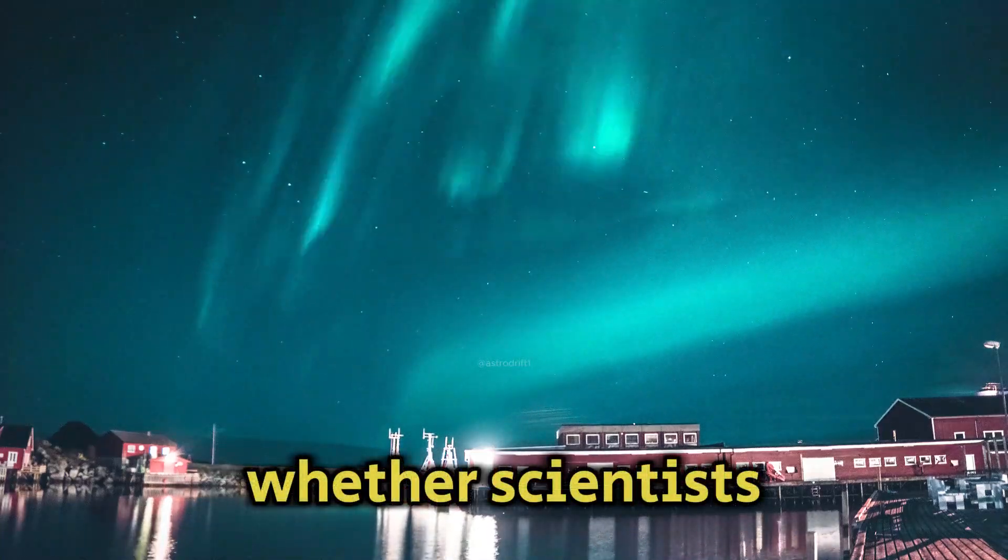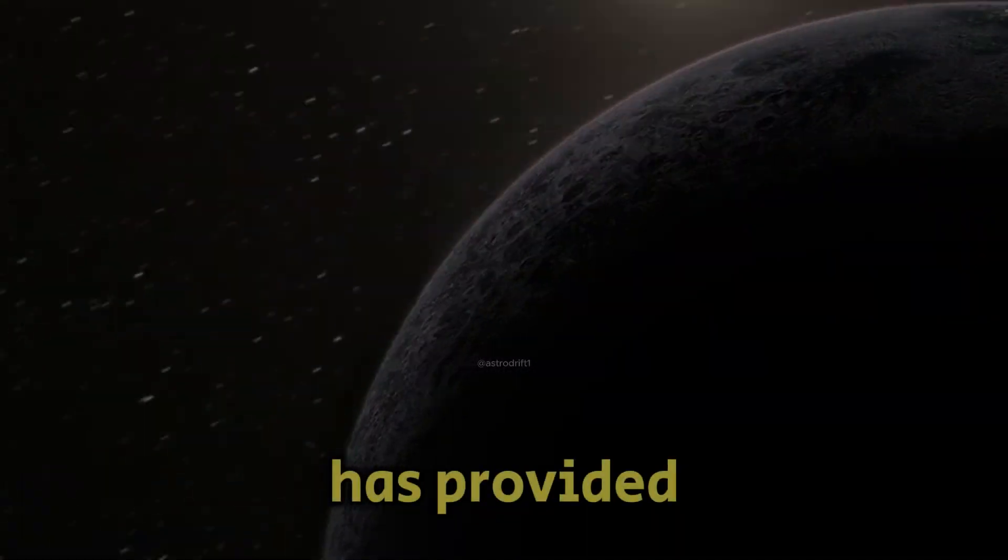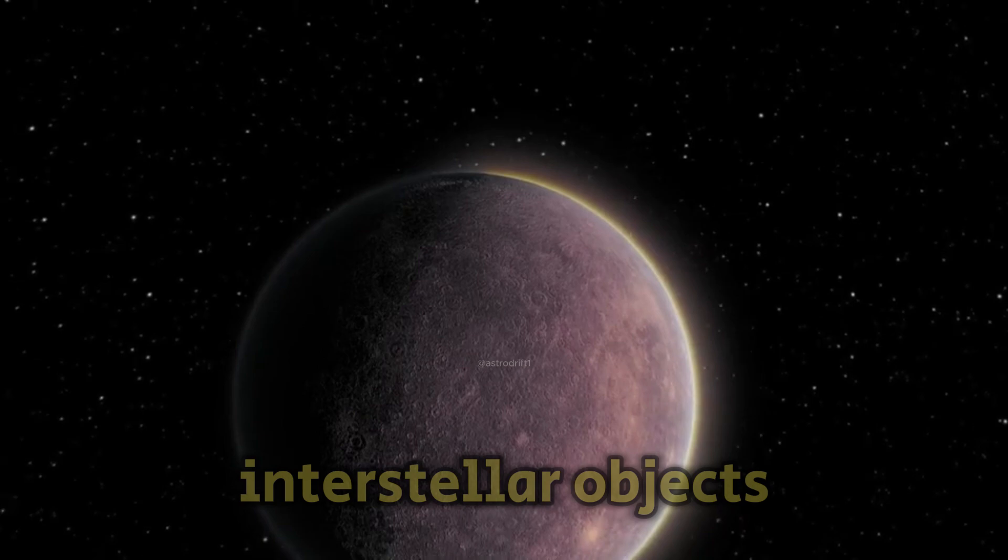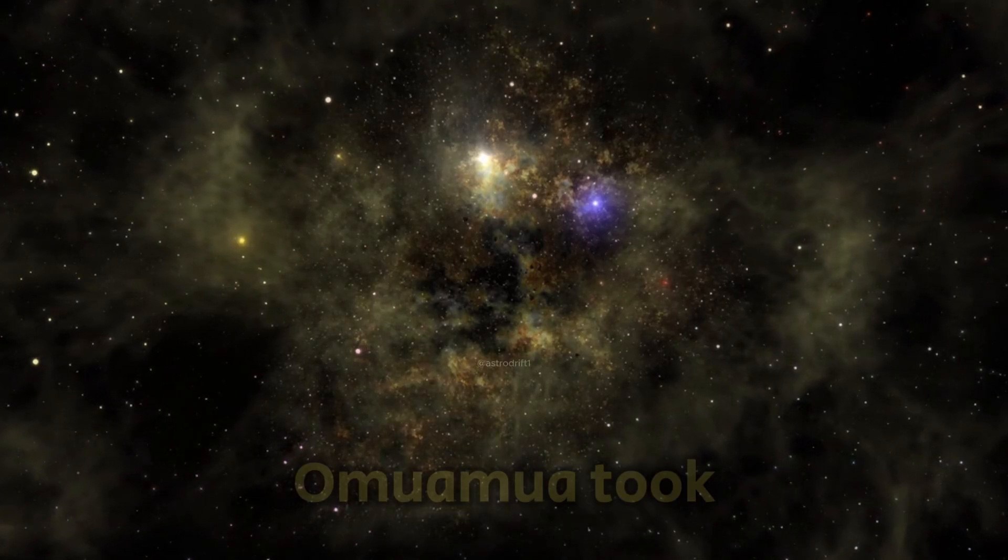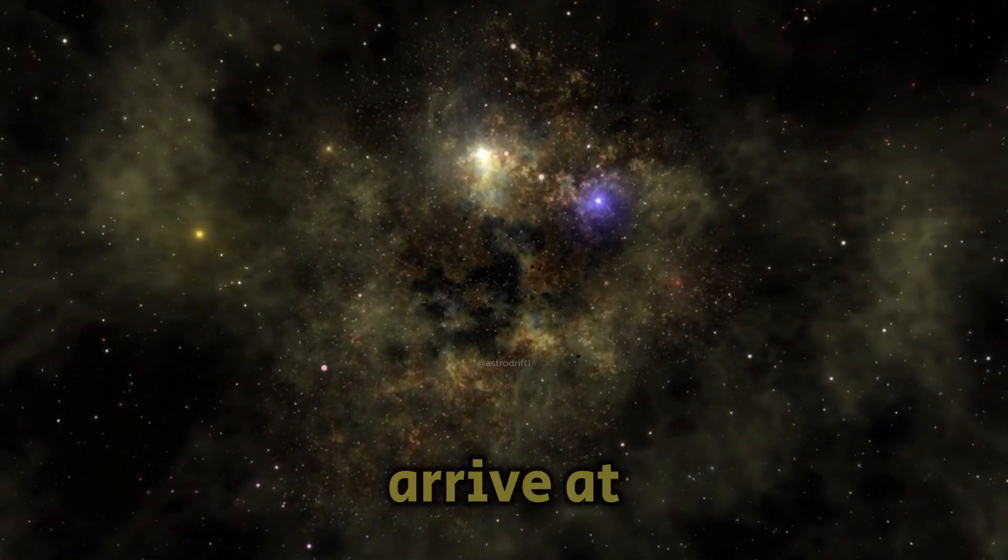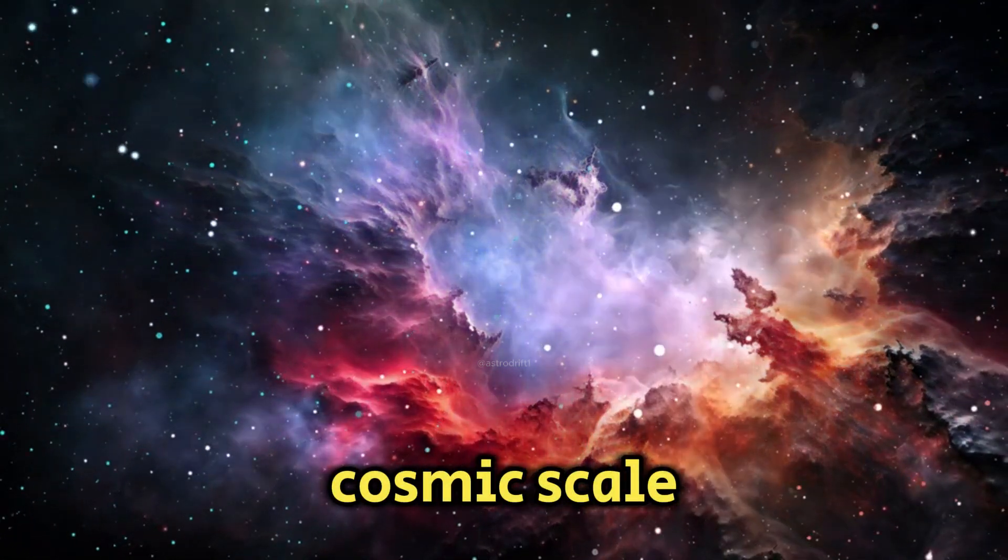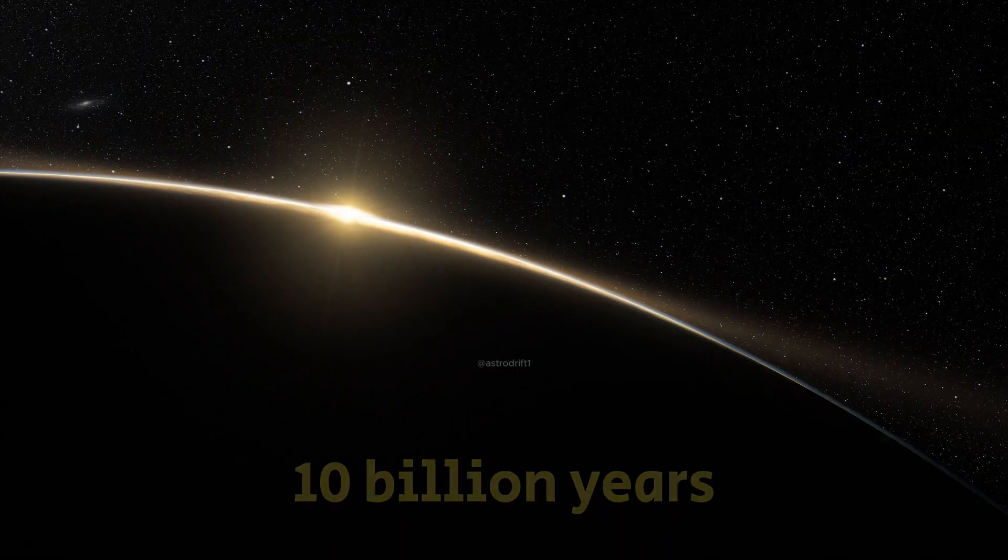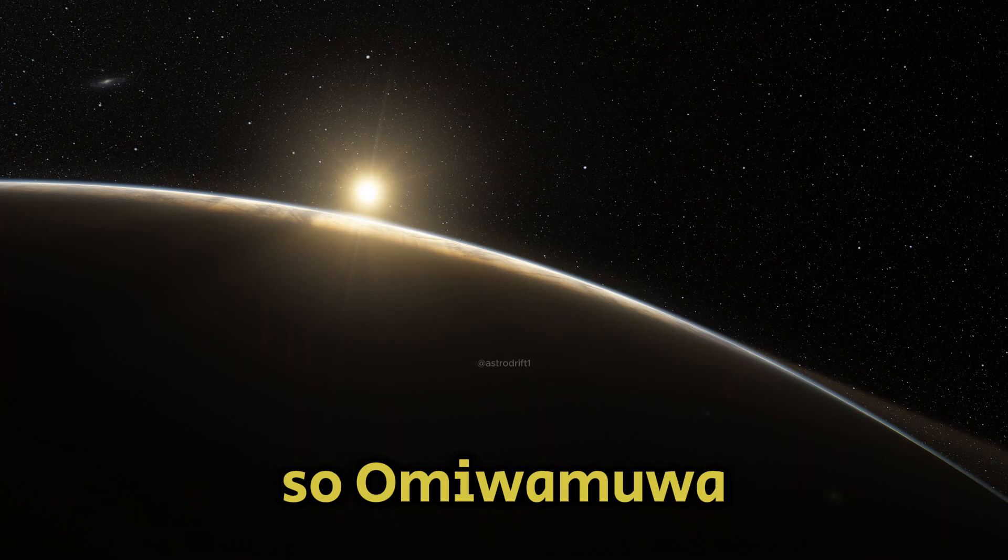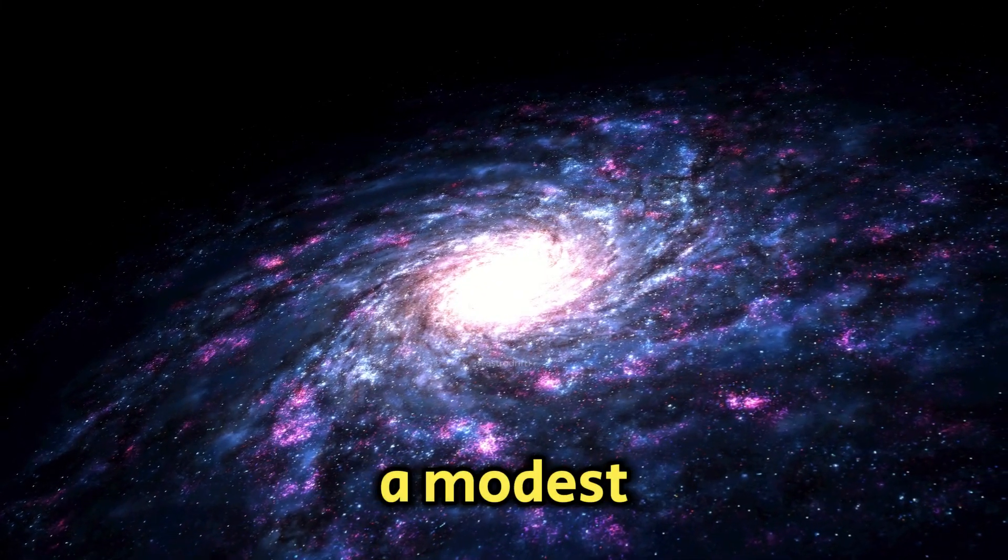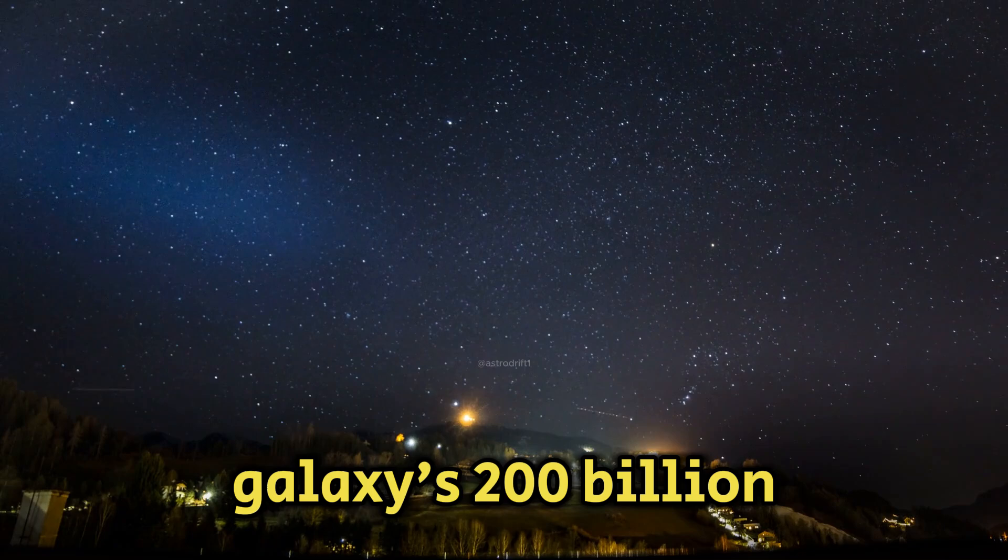Whether scientists reach Oumuamua or not, its visit has provided valuable insights that could prepare humanity for future encounters with interstellar objects. Even though Oumuamua took billions of years to arrive at its current location, its presence is fleeting on the cosmic scale. The Milky Way galaxy is about 10 billion years old, so Oumuamua could have traveled through roughly 20,000 star systems, a modest fraction compared to the galaxy's 200 billion stars.